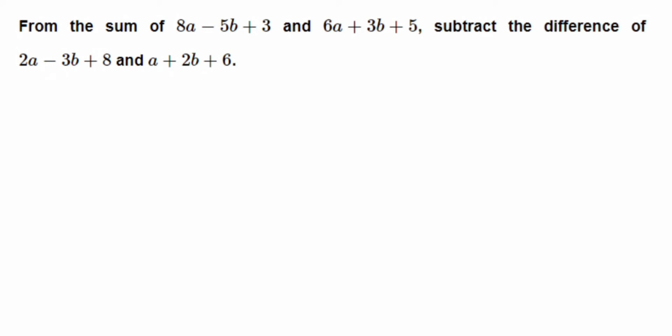"From the sum" means first we have to add the first two expressions: 8a minus 5b plus 3 and 6a plus 3b plus 5. Keep that result, and then "subtract the difference" means we subtract the second pair of expressions — whatever answer we get, we subtract again.